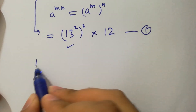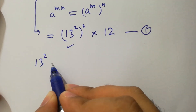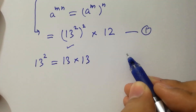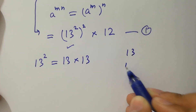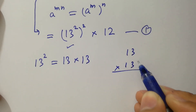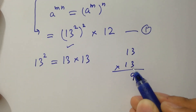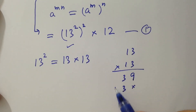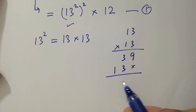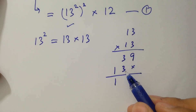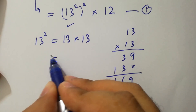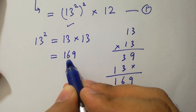First, we have 13 squared, which is equal to 13 times 13. We have 3 times 3 is 9, 3 times 1 is 3, 1 times 3 is 3, 1 times 1 is 1. We have 3 plus 3 is 6, giving 169. So 13 squared is 169.